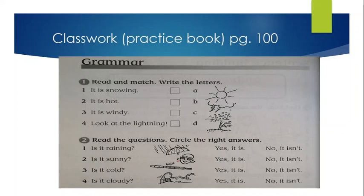Open page 100 for practice book. Read and match. Write the letter. It is snowing. Where is snow? Here, letter C is representing that picture. It is hot. The first picture. Letter A is representing. It is windy. Letter D is representing. Look at the lightning. Letter B is representing that picture.